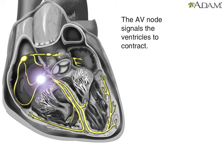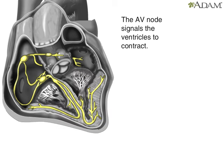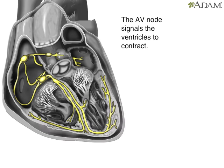the signal travels to the AV node, through the bundle of HIS, down the bundle branches, and through the Purkinje fibers, causing the ventricles to contract.